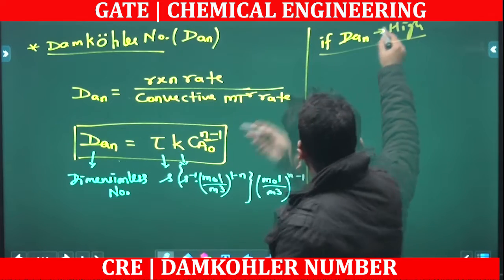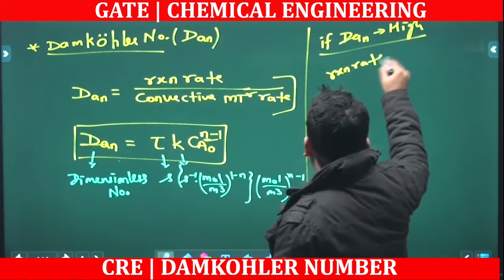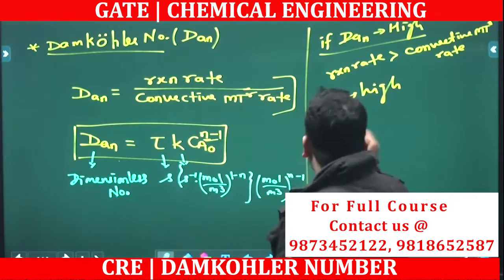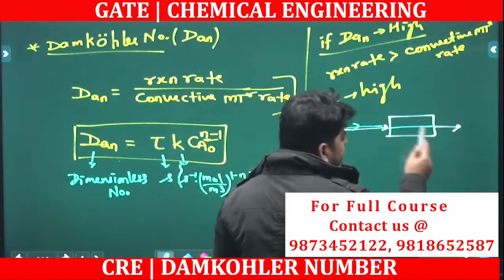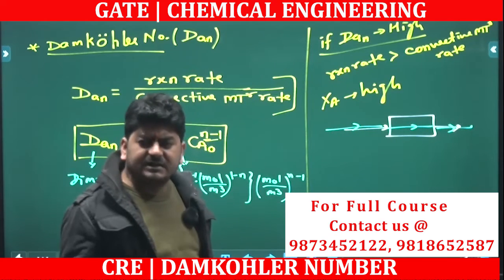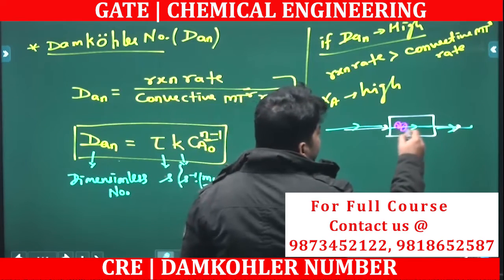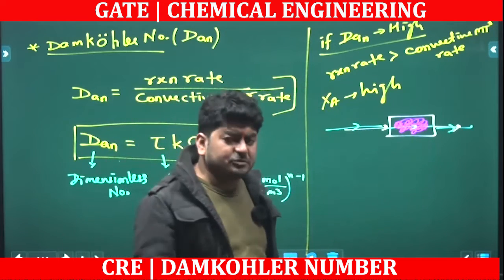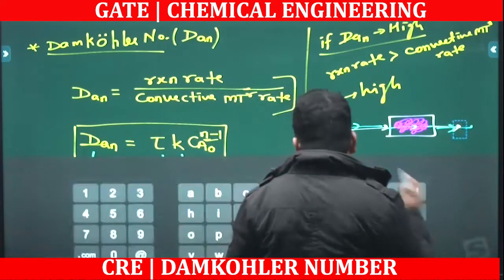If the Damköhler number is high, from the definition it means the reaction rate is higher than the convective mass transfer rate, and therefore the conversion will also be high. In a flow reactor, molecules enter, pass through, and exit. If the reaction rate is high, the reaction occurs inside the reactor, so most molecules participate in the reaction, giving high conversion, and very few molecules leave at the outlet.